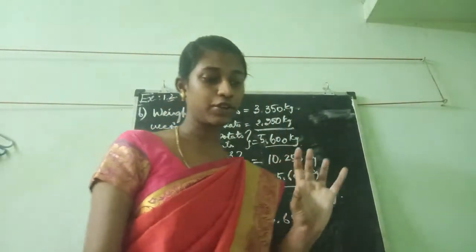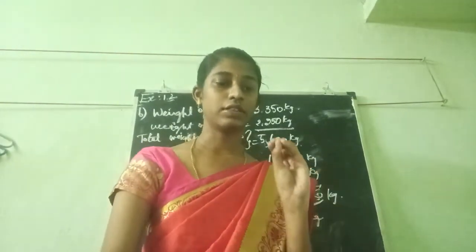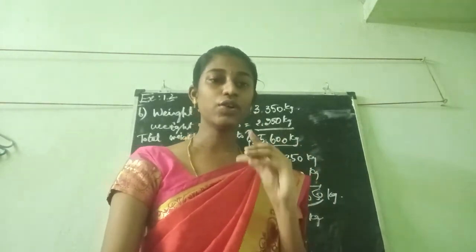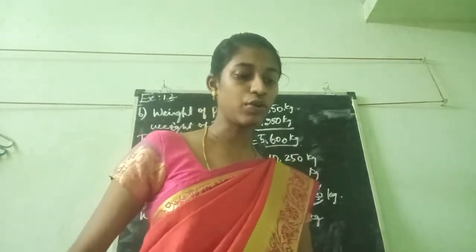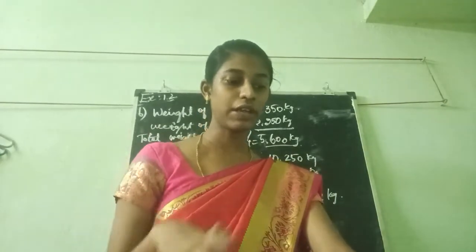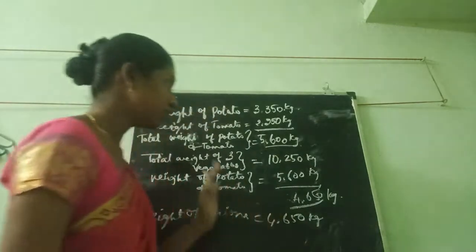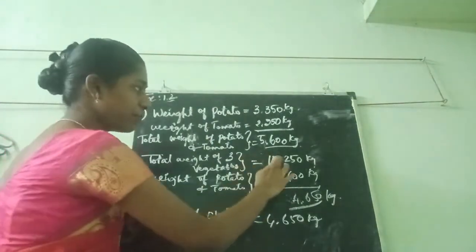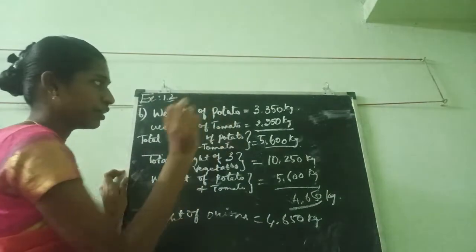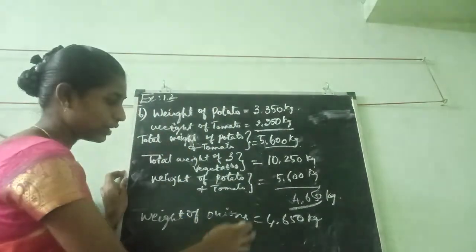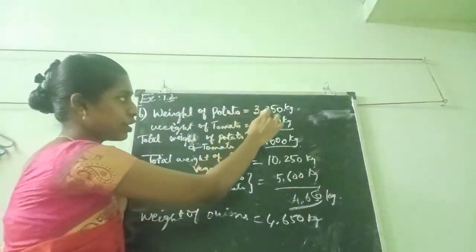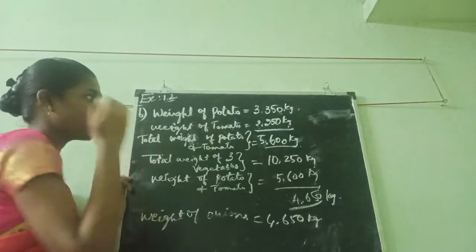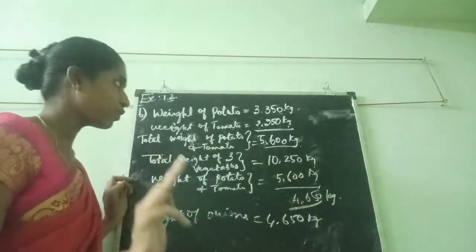The given data: potato weight is 3.50 kg, tomato weight is 2.50 kg, some onion. We want to find the weight of the onion. The total weight of the 3 vegetables is 10.50 kg. We want to total potato and tomato weight first, so: 0 plus 0 is 0; 5 plus 5 is 10, write 0 carry 1; 3 plus 2 is 5, plus 1 carry is 6; 3 plus 2 is 5. So potato and tomato together weigh 5.60 kg.